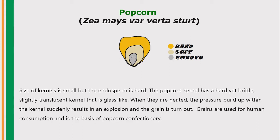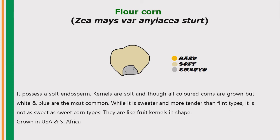Next, flour corn — Zea mays var. amylacea. This flour corn doesn't have a harder outer layer; it possesses soft endosperm. Kernels are soft. All colored corns are grown, but white and blue are the most common flour corn types. While it is sweeter and more tender than the flint types, it is not as sweet as sweet corn. The kernels are fruit-like in shape and these flour corns are majorly grown in the USA and southern Africa.